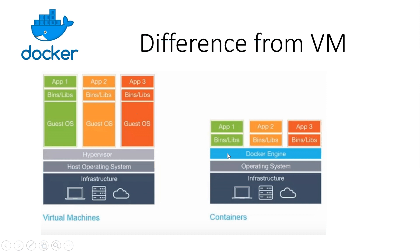In virtual machines, each app uses the kernel of its own guest OS, but in Docker the applications use the kernel of the base OS. Because of that, applications on different containers do not require separate resources — they utilize resources as and when required. For example, with a virtual machine and 8 GB of RAM running 3 virtual machines, you need to assign 2 GB to each. But with Docker, your RAM remains the full 8 GB, and containers grab and release memory at runtime as needed.